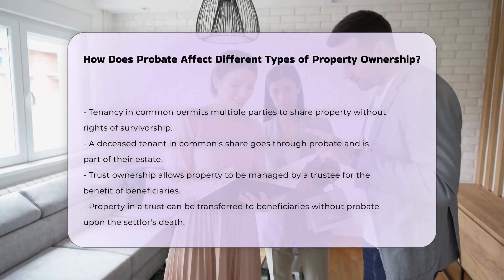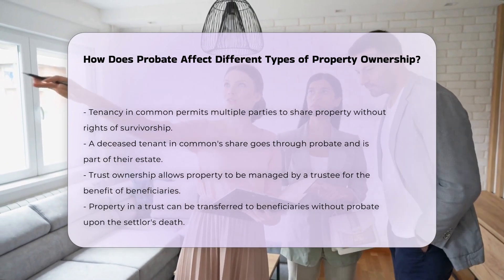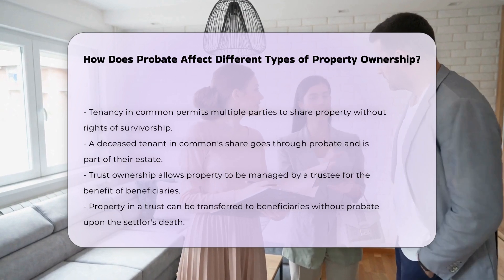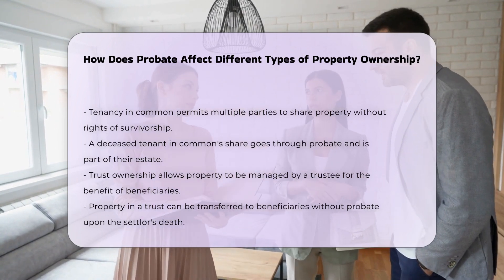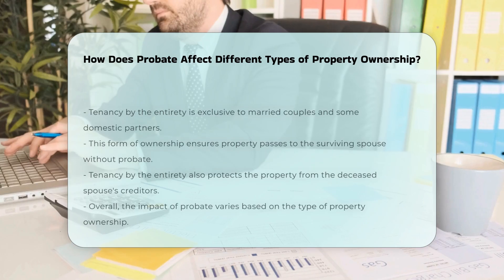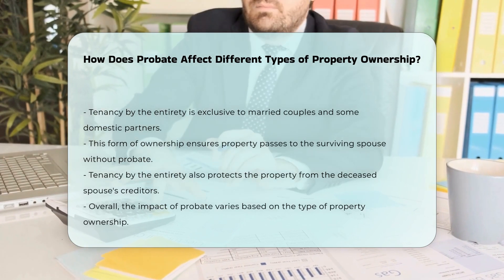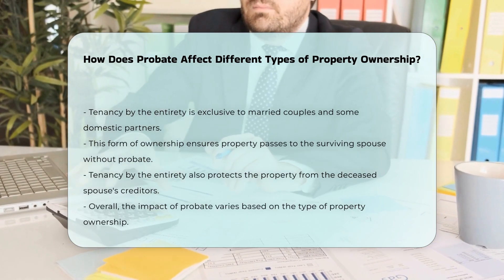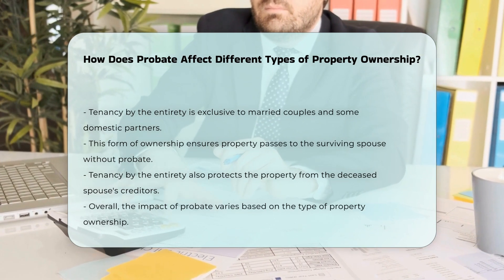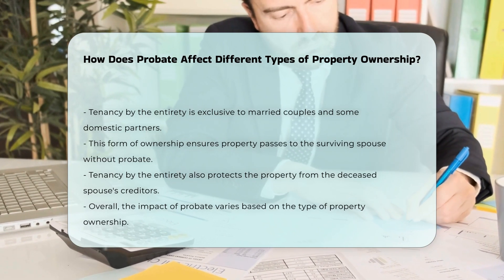Tenancy by the Entirety is a form of joint ownership available only to married couples and, in some states, domestic partners. Similar to joint tenancy, property owned in tenancy by the Entirety passes to the surviving spouse without going through probate. This form of ownership ensures that the property remains protected from the creditors of the deceased spouse and automatically transfers to the surviving spouse.